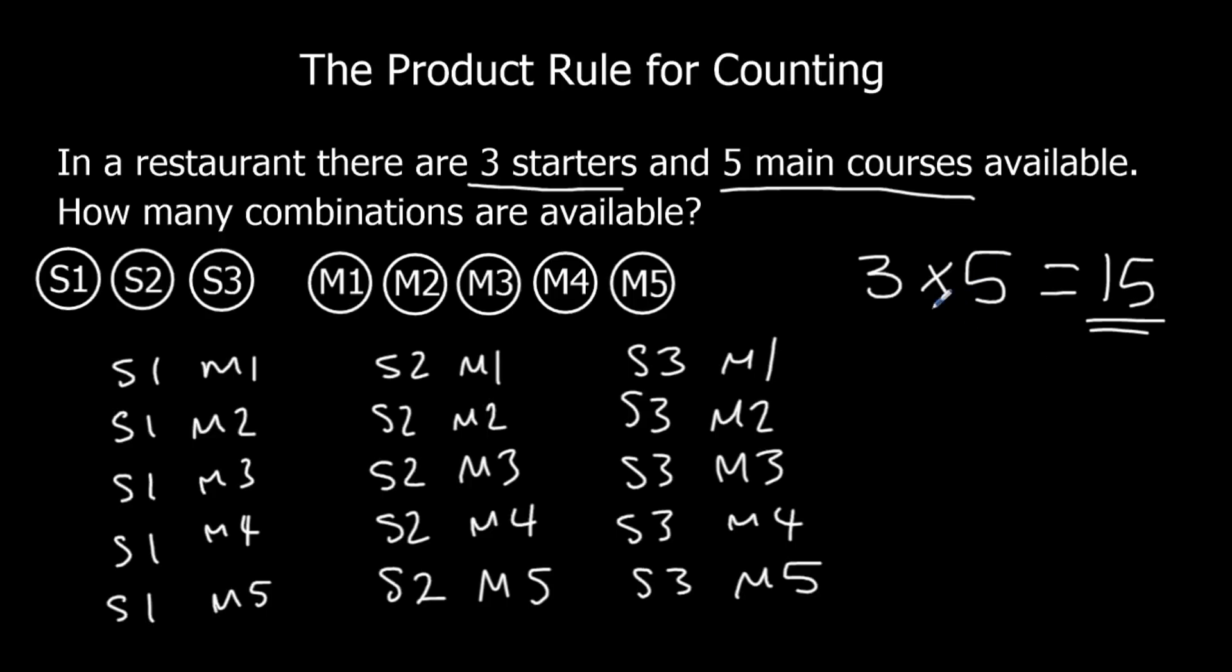we just do 3 times 5 and then that would tell us straight away there are 15 combinations available. So there are 5 mains, 3 starters, so 15 combinations available. So all we've got to do is multiply them together and that is the product rule for counting.